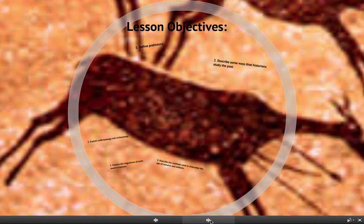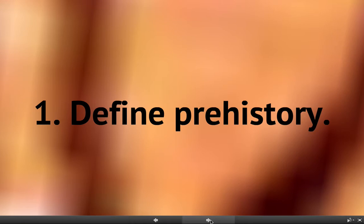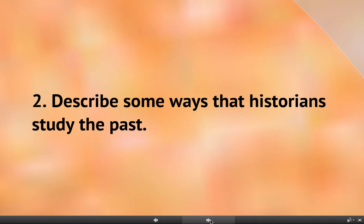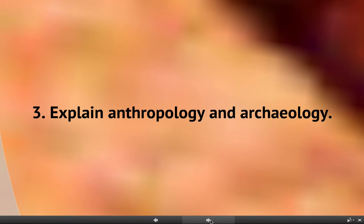Our first lesson objective is to define prehistory — you'll be able to come up with a definition for what prehistory is. Our second lesson objective is to describe some ways that historians study the past. How do we know about things that happened a couple thousand years ago, a couple hundred years ago, or even ten years ago? Historians have ways to study things from the past; we can't get in a time machine, but we do have methods to figure out what was going on.